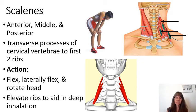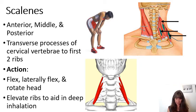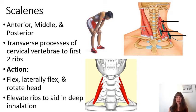These muscles originate on the transverse processes of the cervical vertebrae and insert on the first two ribs. Their action is to flex the neck when they work bilaterally — when both muscle groups on both sides are contracting. If one side is activated, they can laterally flex and rotate the head to the same side.